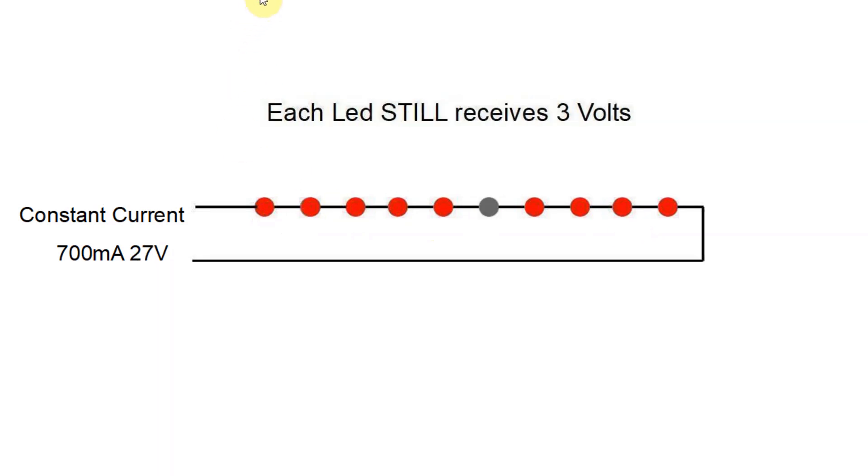If a LED blows, you'll see what's happened here is the power supply is still putting 700 milliamps through the string of LEDs, but it's detected that one of the LEDs has died and it's dropped its output voltage to 27 volts. So each remaining LED still receives 3 volts, which is its optimum voltage.